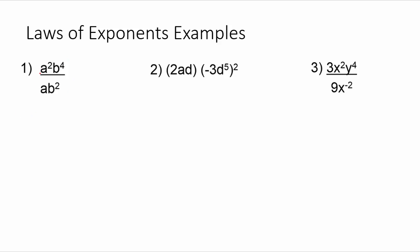So we'll start with this first one, a squared b to the fourth divided by ab squared. Now when we're dividing like bases like this, we can think about it like canceling things, or we could subtract the exponents. In this case, probably either way will be a good way to think about it.